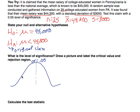This is a one-tailed test — specifically a left-tailed test. The null hypothesis is equals, as it always will be, and the alternative is less than: the mean is less than $45,000. Less than is a left-tailed test, so we need a rejection region to the left with an area of 0.05. The level of significance of 0.05 is going to be the area in our rejection region.